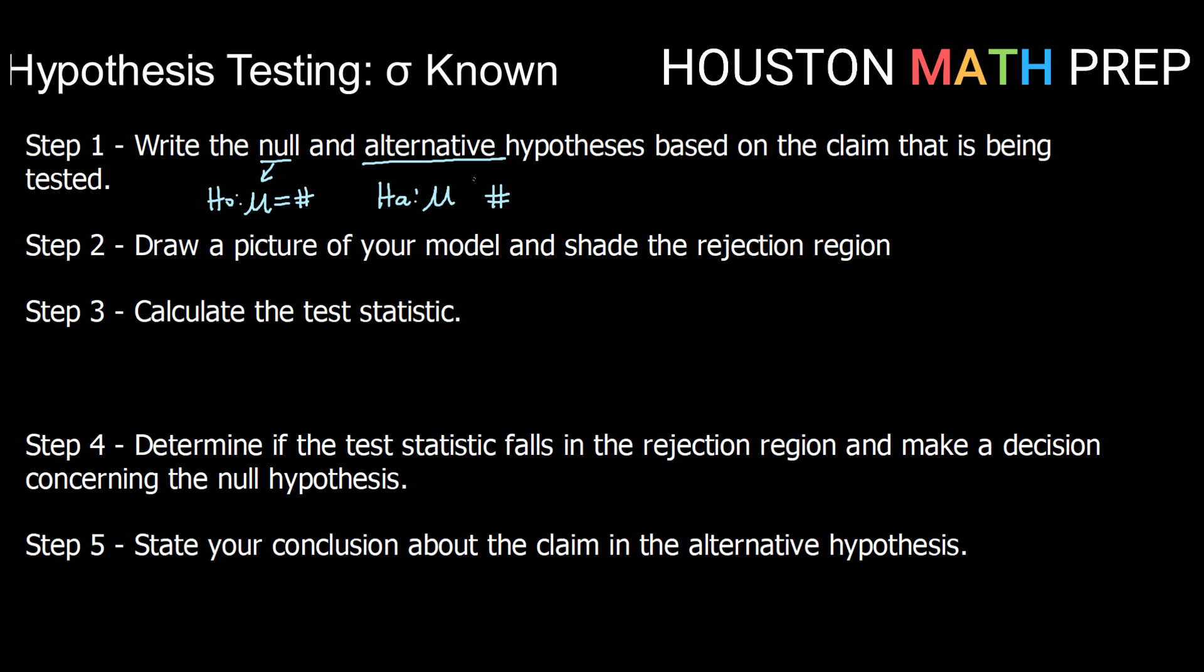Once you've written those hypothesis statements, you're going to draw a picture of your model. In this case it's going to be a normal model, and you're going to shade your rejection region based on that alternative hypothesis. So a left one-sided, a right one-sided, or a two-sided.